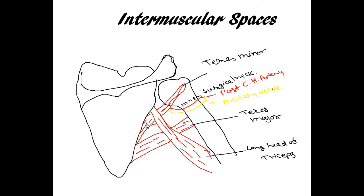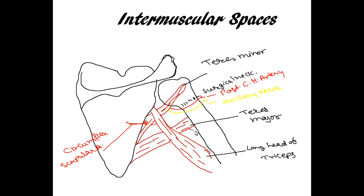In the upper triangular space we have only vessels — the circumflex scapular artery, which winds around the lateral border of the scapula. In the lower triangular space we have one artery and one nerve: the artery is the profunda brachial artery, a branch of the brachial artery, and along with that the radial nerve will go.